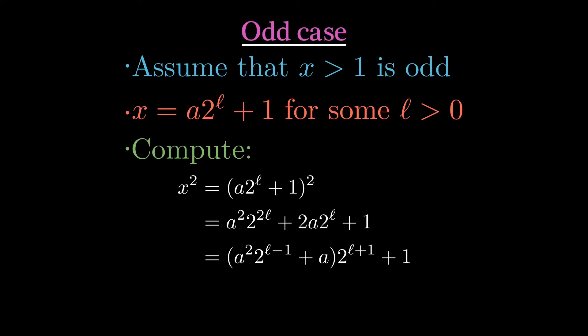By induction, if we apply f enough times, then we eventually get a number that is 1 modulo 2 to the k, or 1 modulo n, and we're done.